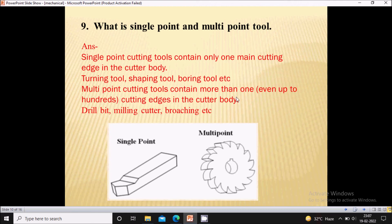Now multipoint cutting tools contain more than one cutting edge in cutter body. So even up to 100 cutting edges can also be present in the multipoint cutting tool. So examples of multipoint cutting tool are drill bit, milling cutter, broaching, etc.